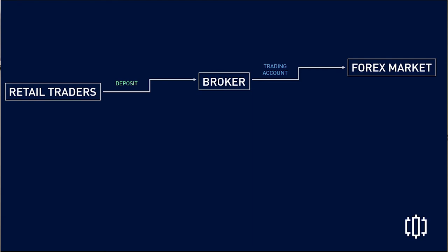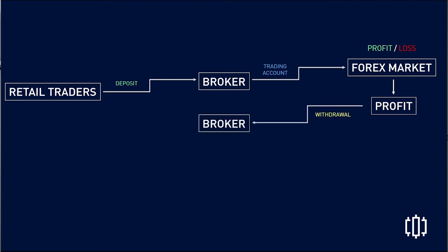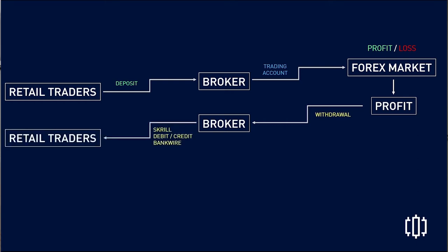It will all depend on your performance whether it's a profit or a loss. Let's say for example you enrolled in FIBO and you made money — you became profitable. Right then and there, you can withdraw your profit from the forex market through the broker. The broker will send it via Skrill, debit or credit card, or bank wire, depending on your choice — but it goes straight to your bank. I highly recommend using Skrill because it means fewer questions from the bank.